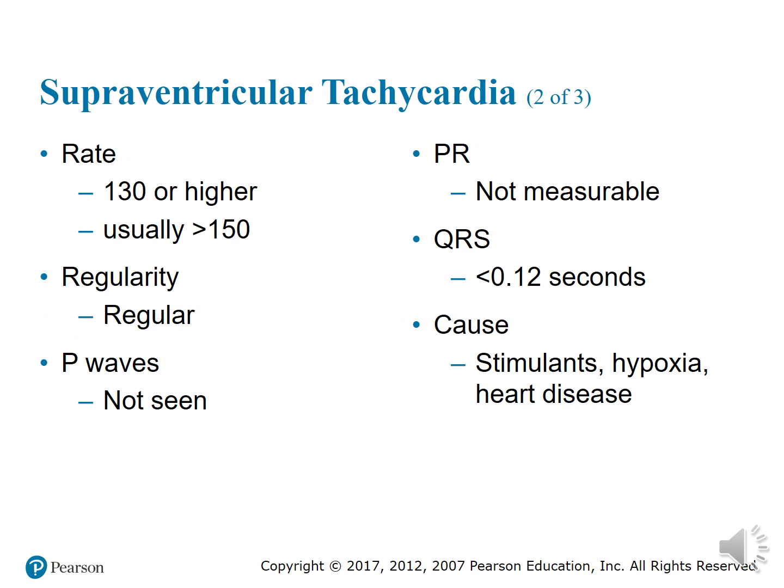SVT criteria: the rate is anywhere from 130 or higher, usually greater than 150 beats per minute depending on how fast it's going. Your regularity is regular. There are no P waves, so therefore no PR interval. Your QRS should be less than or equal to 0.12 seconds.